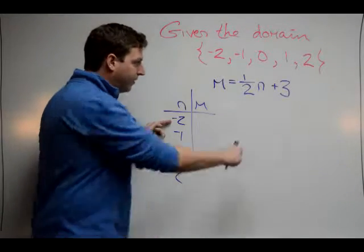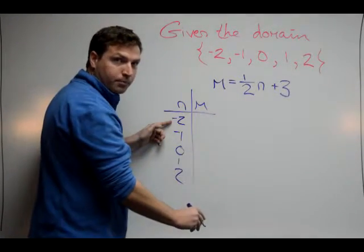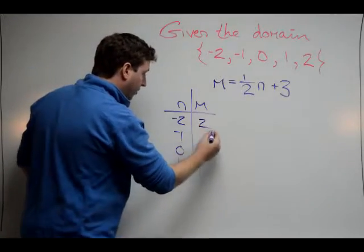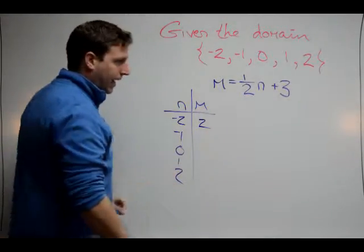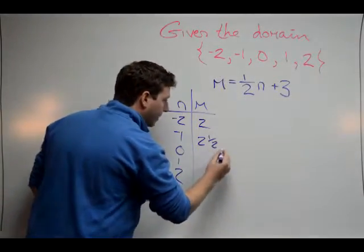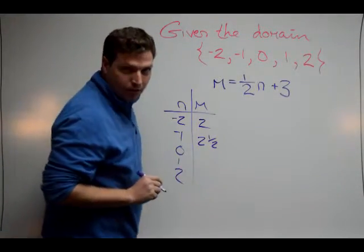So I'm going to take 1 half of negative 2, which is negative 1 plus 3, and I get 2. Negative 1 times 1 half is negative 1 half, plus 3 is going to be 2 and a half. If you're having trouble with fractions, you're going to need to review those.